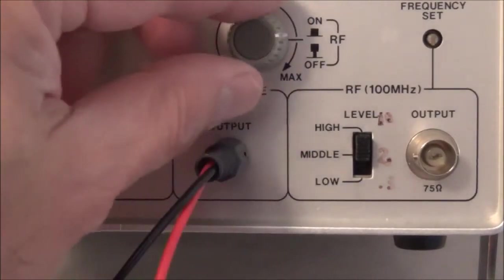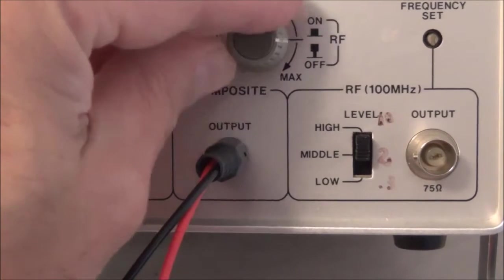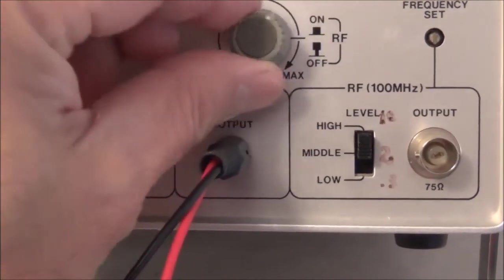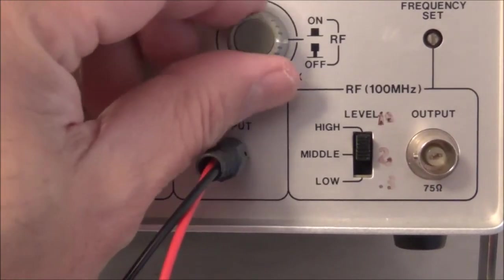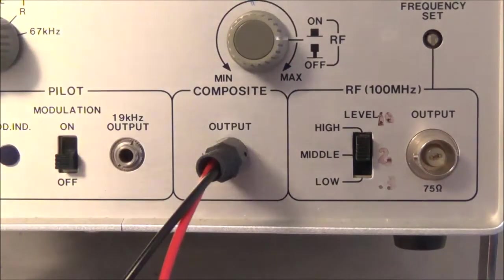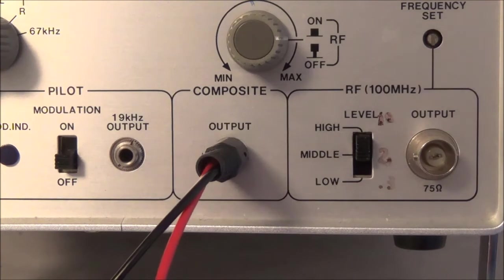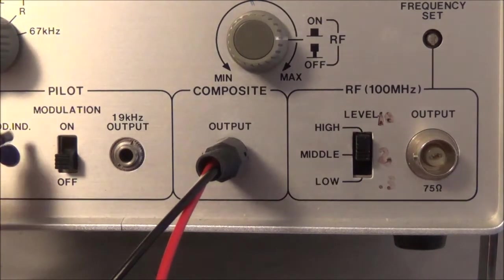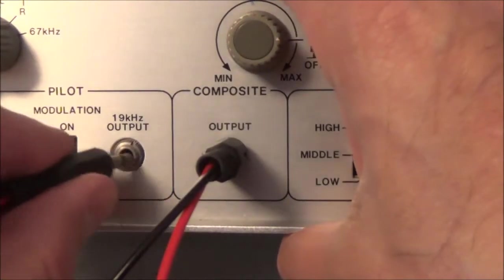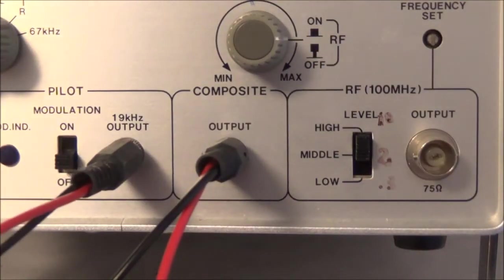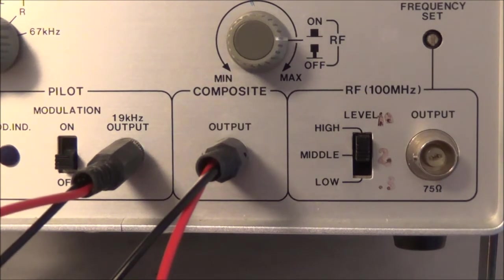So next we will go ahead and check the pilot signal. I am going to adjust the amplitude of the composite signal as suggested here by this knob, and right now I am going to adjust it three quarters of the way up. So next the 19 kHz pilot signal. A lot of times it is a problem with bad connections. Put that in there and of course in order to get a reading we are going to have to turn it on.